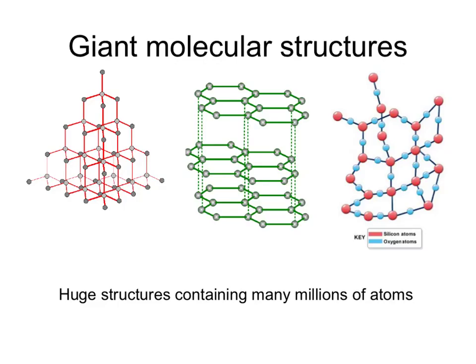Although we can't draw a complete giant molecular structure - we can only draw a section of it - these are all giant molecular structures. On the left we have diamond. Diamond has each carbon atom joined to four other carbon atoms in a structure that goes on for millions and billions of atoms in all directions.